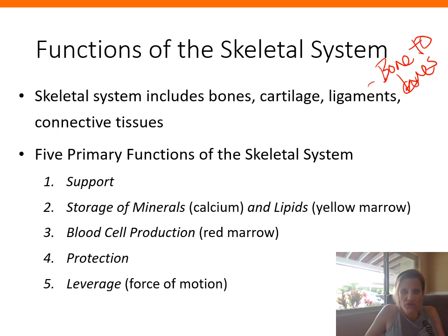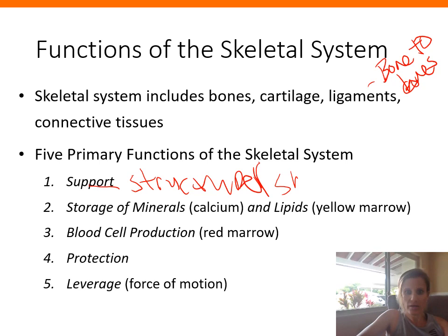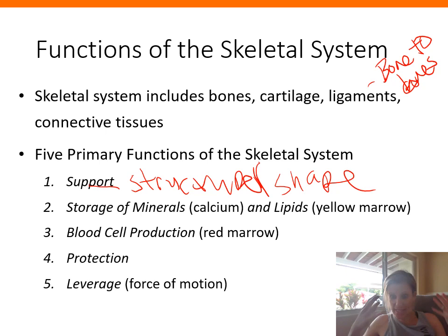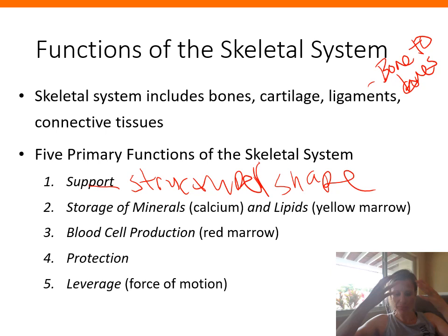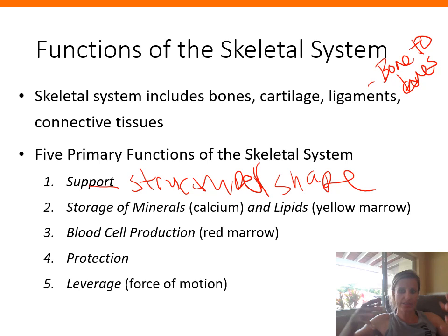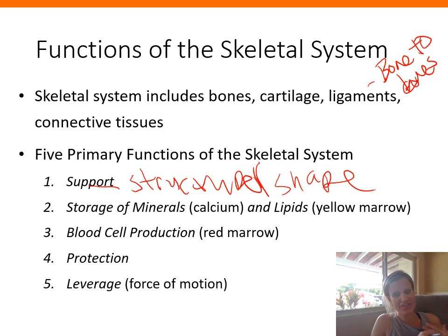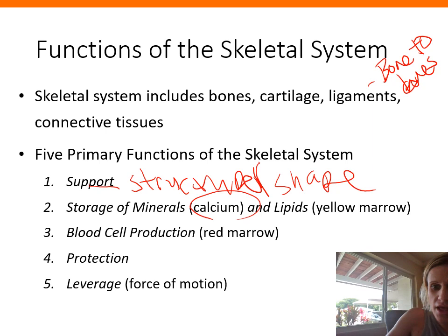The primary functions of the skeletal system include providing support and structure for the body. Our overall stature, size, and shape are dictated by our skeletal system — if your bones are long you're tall, if short you're short. The bones support all of our other tissues: the brain sits inside the skull, the lungs and heart sit inside the chest, and muscles attach to and are structured alongside our bones.